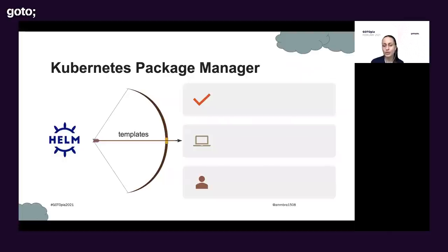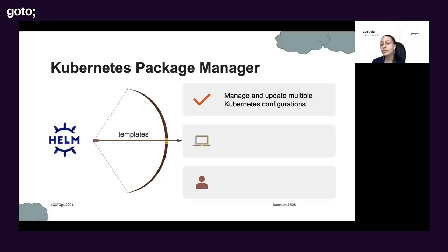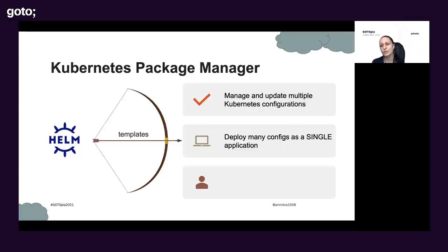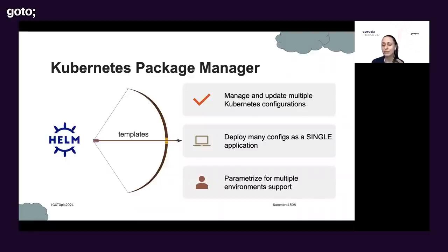Helm, the Kubernetes Package Manager, is there to help you automate a little bit of your work. What is Helm about? It's about creating templates — having templates to ease your work with Kubernetes, to boilerplate the information you would have normally done with Kubernetes objects. It's good to have them as templates so you can manage and update multiple Kubernetes configurations via those templates. Also, you want to deploy multiple configurations as a single application — you don't want to issue multiple kubectl commands. Helm also lets you parameterize for multiple environment support, separating values from the actual object definitions.